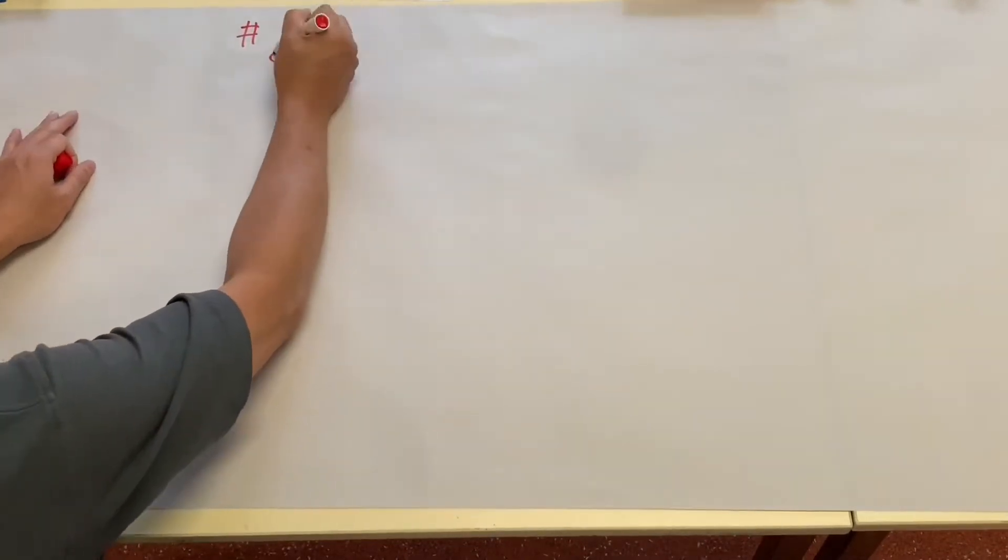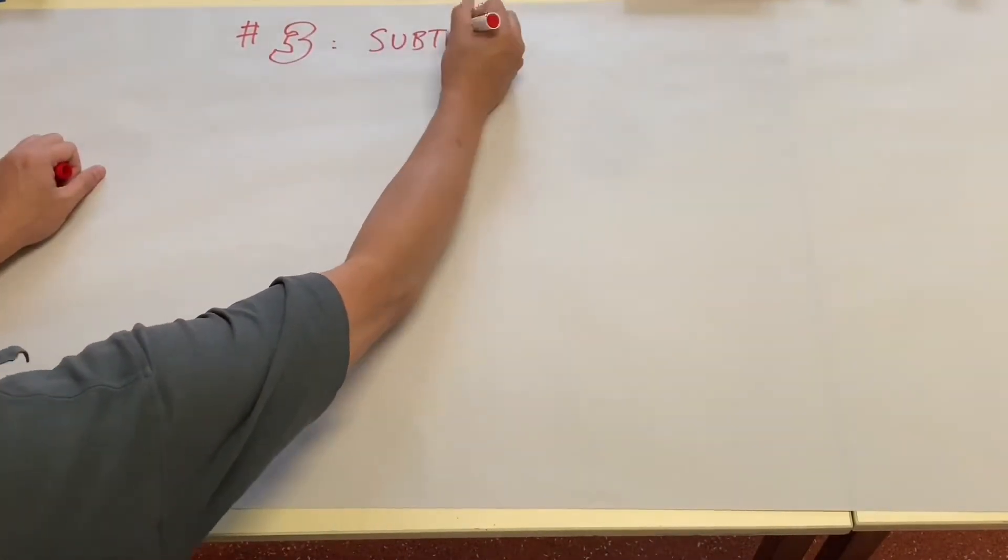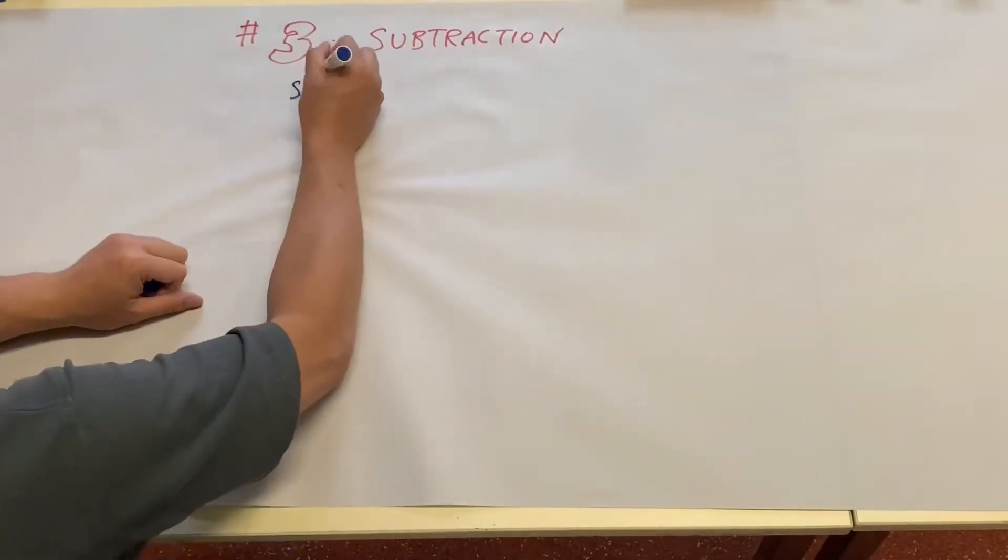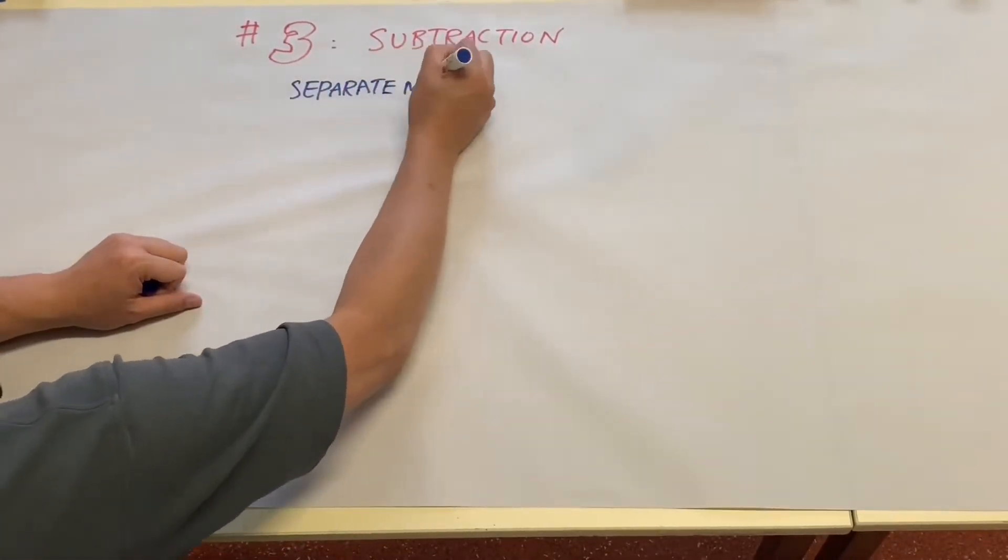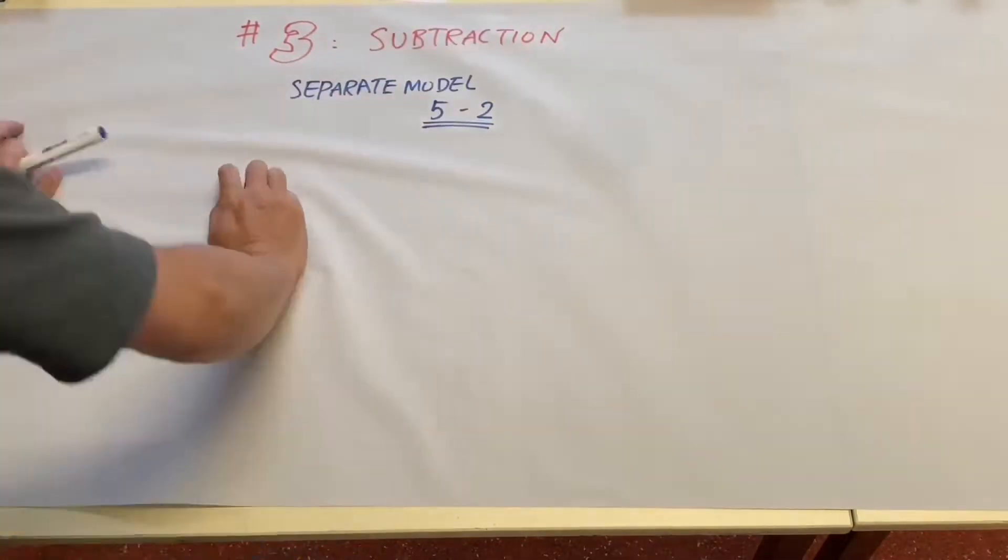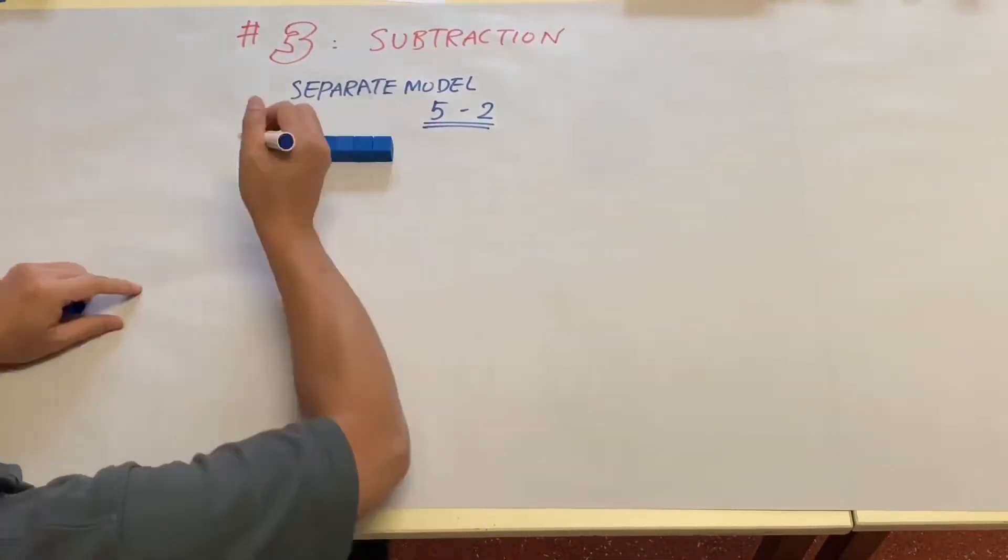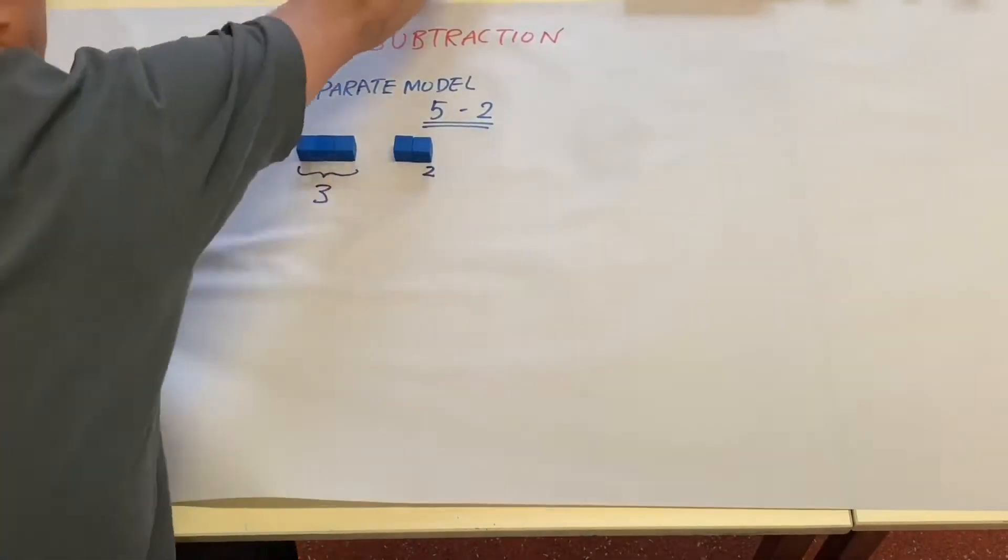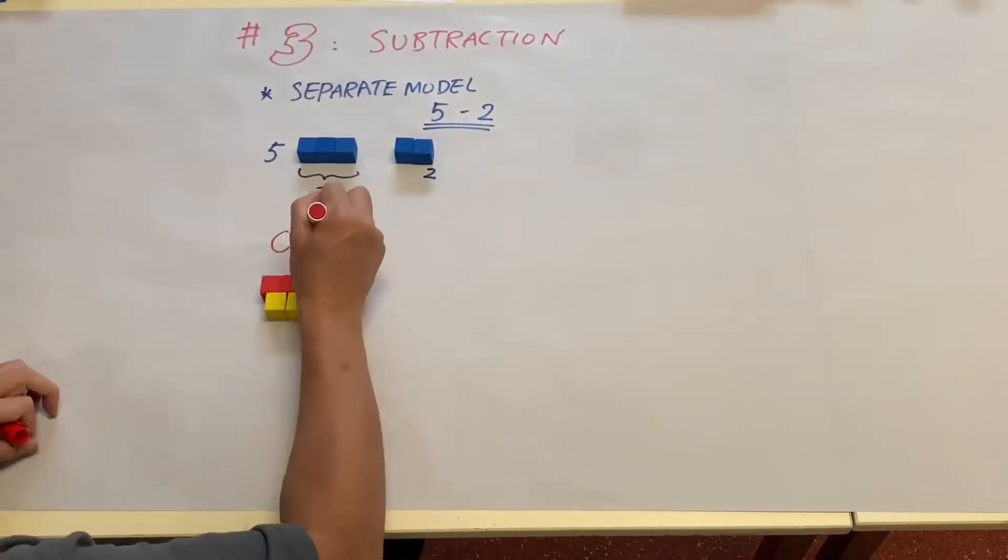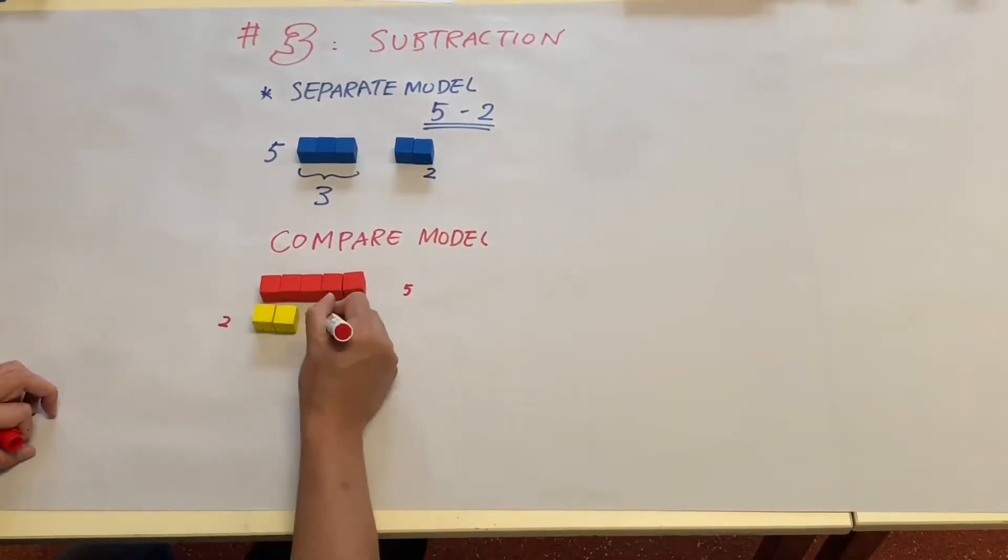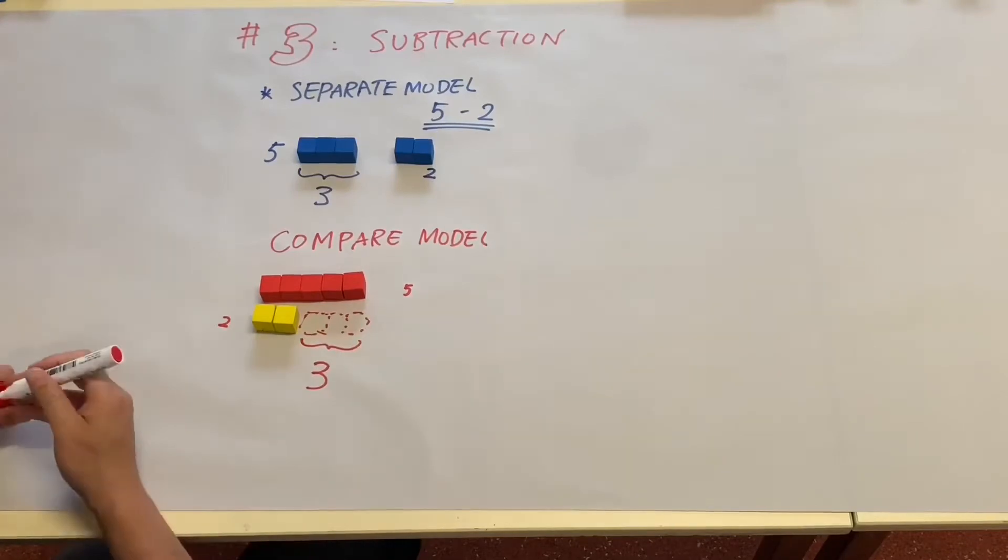Video number three is about subtraction. The students are going to go through two concepts: one is the separate model and the other one is the compare model. So the five is separated into three and two, and compare five and two, which is larger and how many.